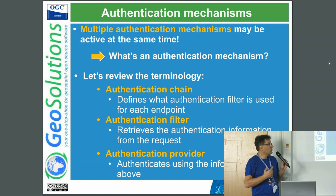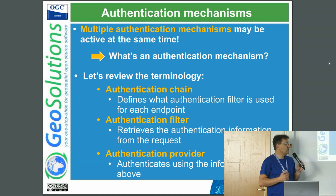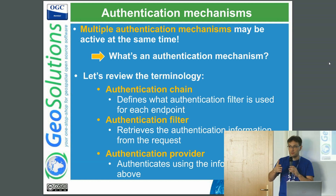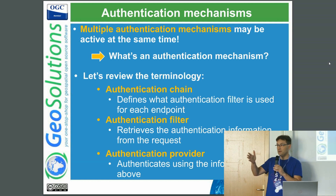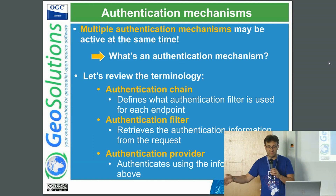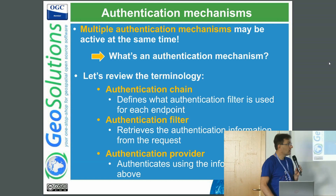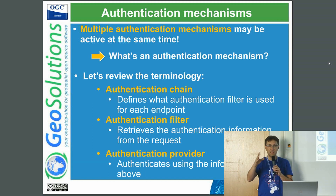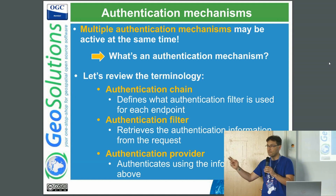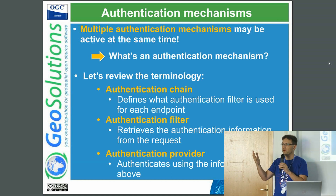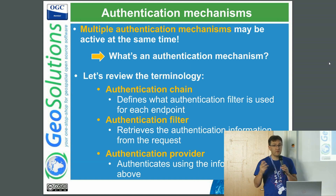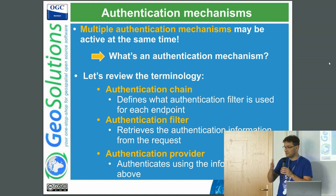It's complicated also because you might want different authentication mechanisms depending on the endpoint you're hitting. For the user interface we typically have a different set of endpoints compared to the OGC services; for the REST API you might want something else. These are called authentication chains — we attach them to an endpoint and say, this is the series of authentication filters you have to try. They can say: let's try form authentication — did someone send a username and password in a form? No. Do I have a cookie? No. Do I have basic authentication? No. Then the user is anonymous.